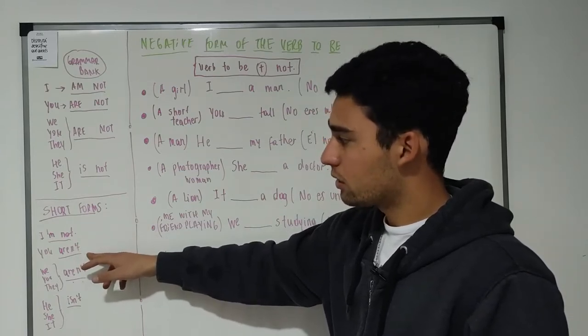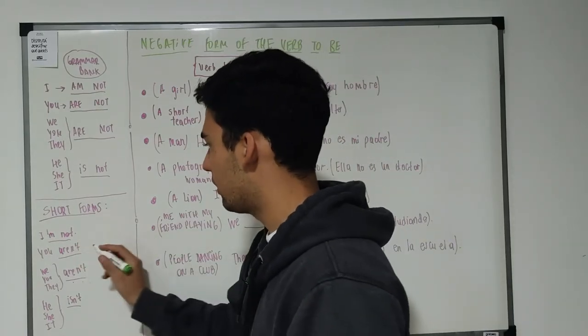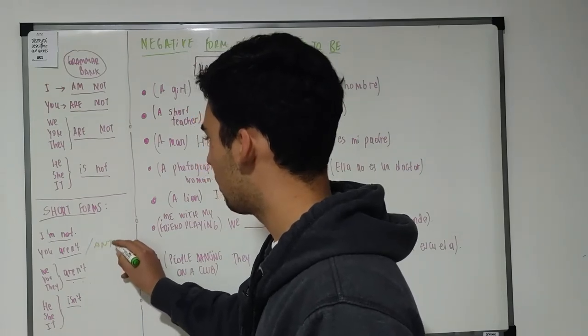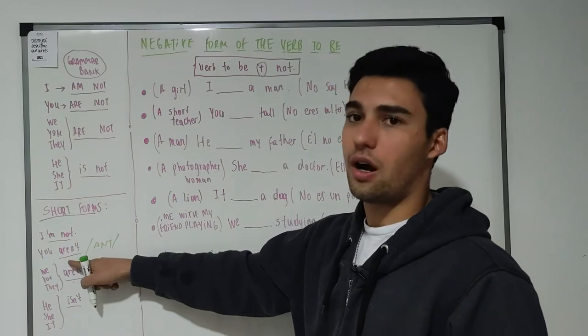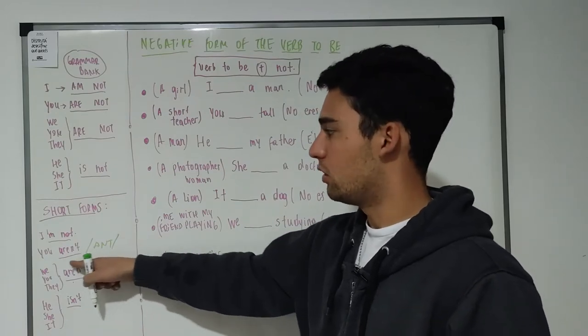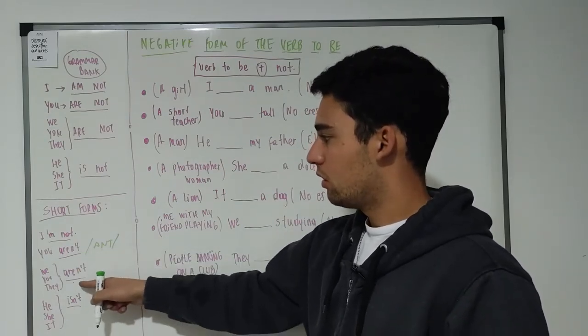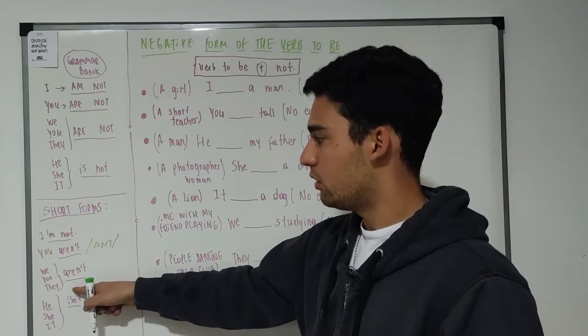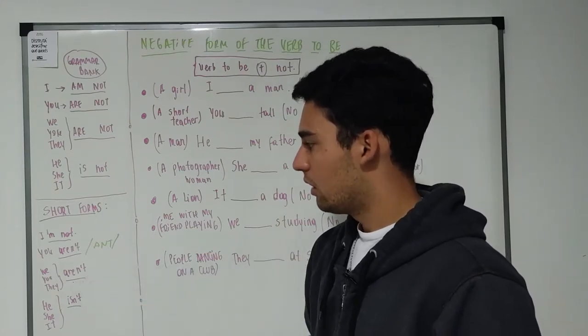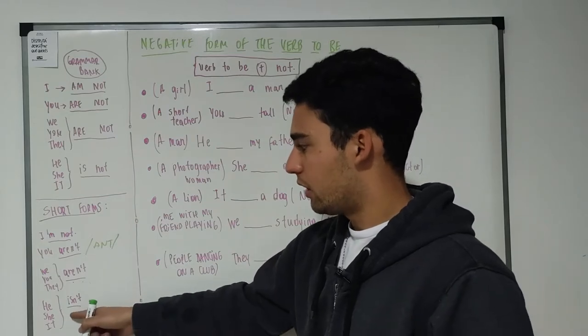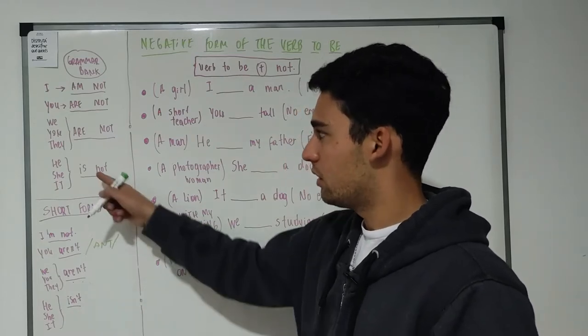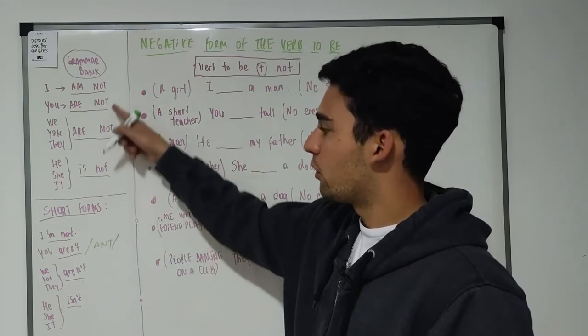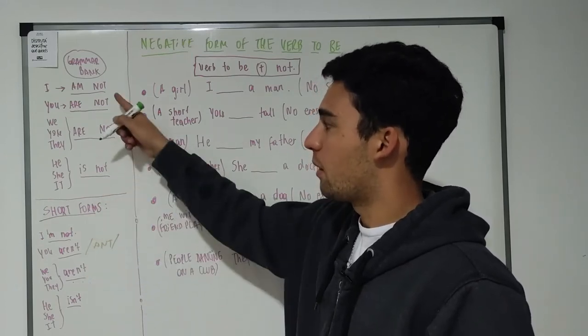You aren't, this is pronounced like this. The same goes with we, you, they. We aren't, you aren't, they aren't. And last, for he, she, it we use isn't. Is not, isn't. Are not, aren't.